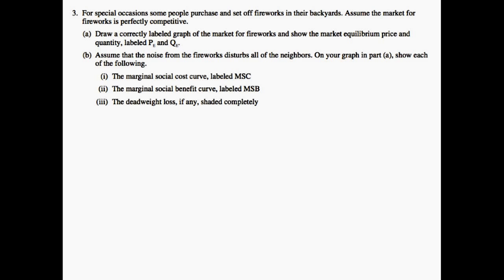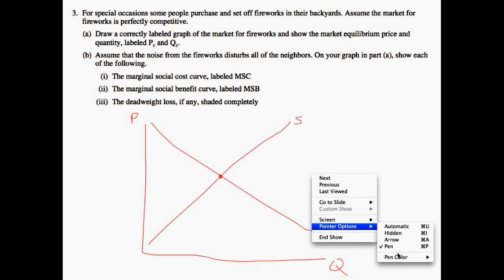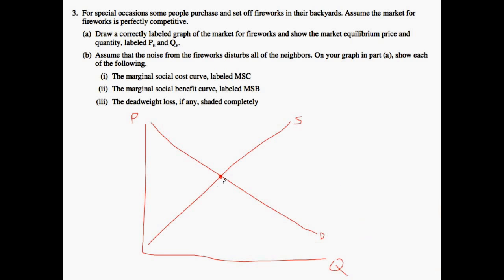Question 3 states: For special occasions, some people purchase and set off fireworks in their backyards. Assume the market for fireworks is perfectly competitive. First, we want to draw a correctly labeled graph of the market for fireworks and show the market equilibrium price and quantity. Equilibrium is where supply equals demand, and we label those as QE and PE.